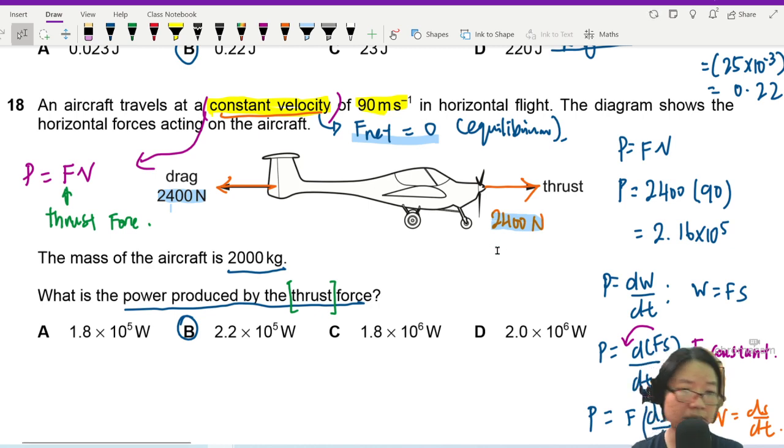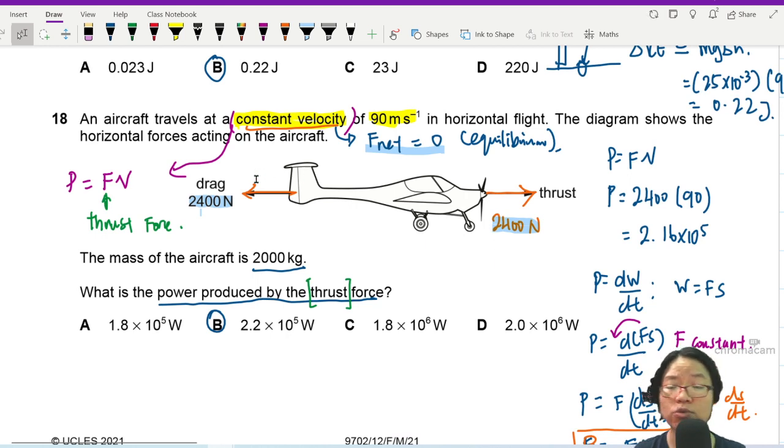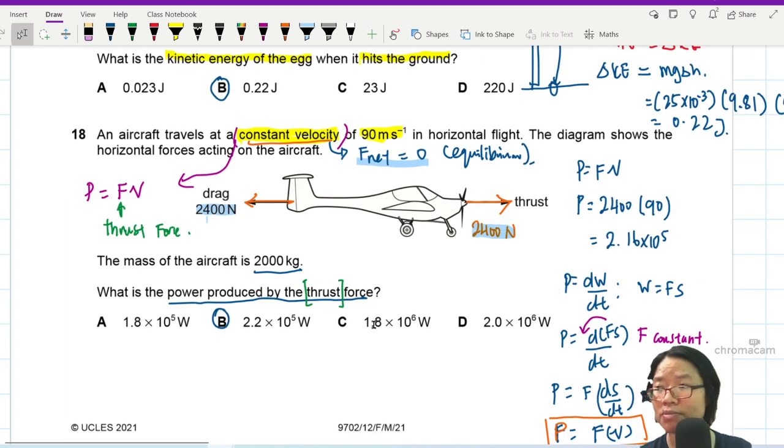If the thrust force is bigger, then the plane will fly faster. If the drag force is bigger, then the plane will slow. So that's it. Pretty straightforward. Power question. To be continued.